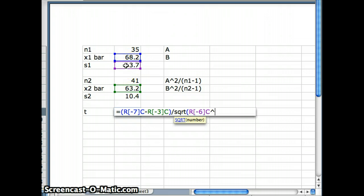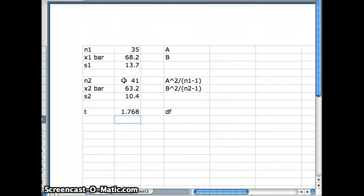s₁² over n₁, s₁² over n₁ plus s₂² over n₂. And what does that give me? That gives me a t of 1.768.